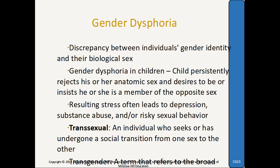A transsexual is an individual who seeks or has undergone a social transition from one sex to another — this is a diagnosis within DSM-5 as a criteria of gender dysphoria. Transgender is used as a broader term and is not an actual diagnosis in the DSM. It refers to a broad spectrum of individuals who transiently or persistently identify with a gender different from their natural gender.